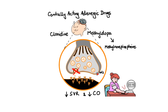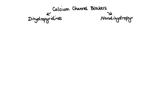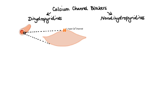Now let's move on to another major class of antihypertensive agents: calcium channel blockers. Calcium channel blockers are divided into two main subclasses — dihydropyridines and non-dihydropyridines. Dihydropyridines selectively inhibit L-type calcium channels in the vascular smooth muscle. Under normal conditions, when calcium enters the smooth muscle cell it causes it to contract, which leads to increased vascular resistance and thus increase in blood pressure.